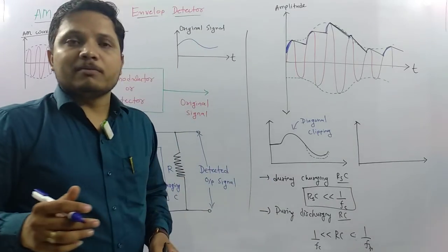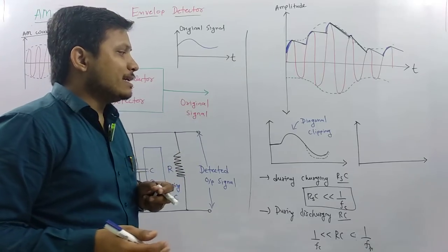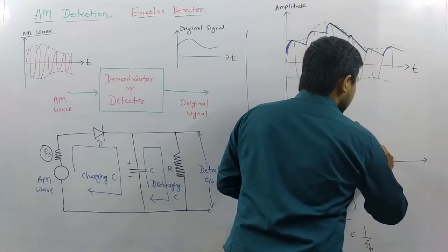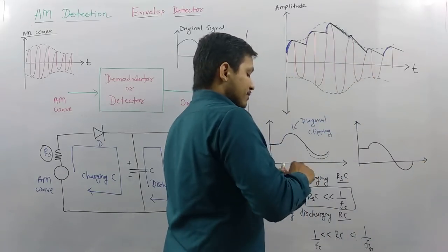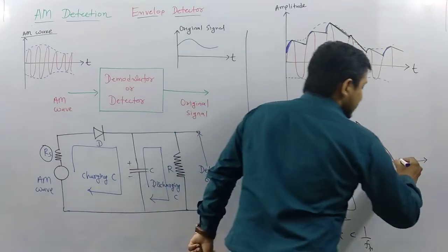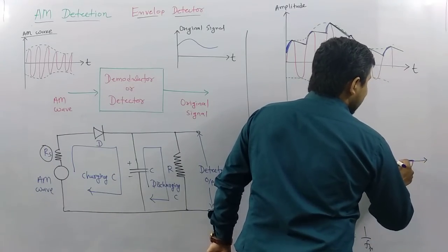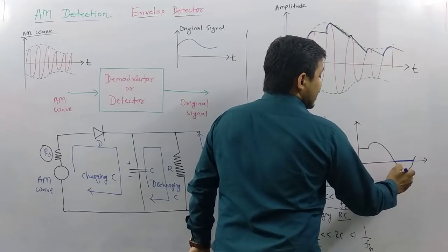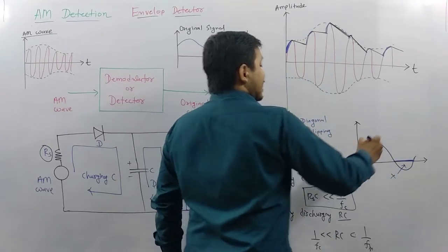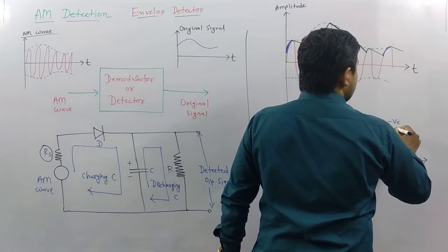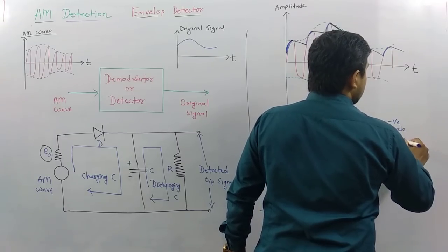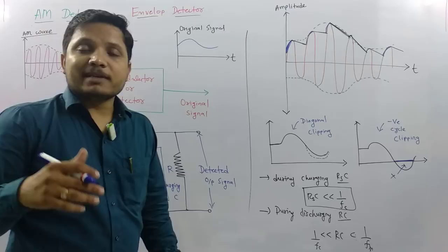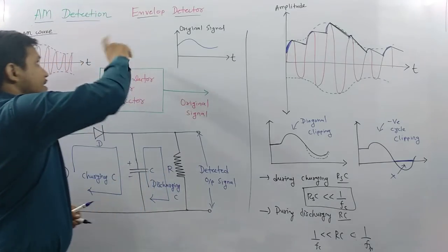The second problem associated with the envelope detector is negative cycle clipping. If the actual information signal has negative half cycles, in practice those negative cycles get clipped because the diode blocks them. So the output will be missing the negative half cycle portions. Both negative cycle clipping and diagonal clipping result in distortion during AM detection by the envelope detector.